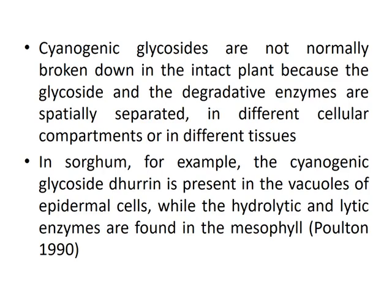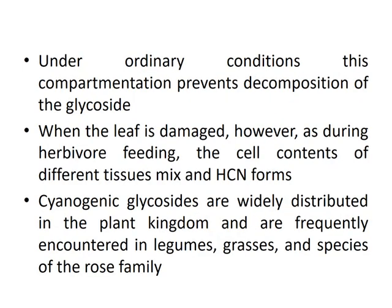Cyanogenic glucosides are not normally broken down in the intact plant because the glycosides and the degradative enzymes are spatially separated in different cellular compartments or in different tissues. In sorghum, for example, the cyanogenic glycoside dhurrin is present in the vacuoles of epidermal cells, while the hydrolytic enzymes are found elsewhere. Under ordinary conditions, this compartmentation prevents decomposition of the glycoside.